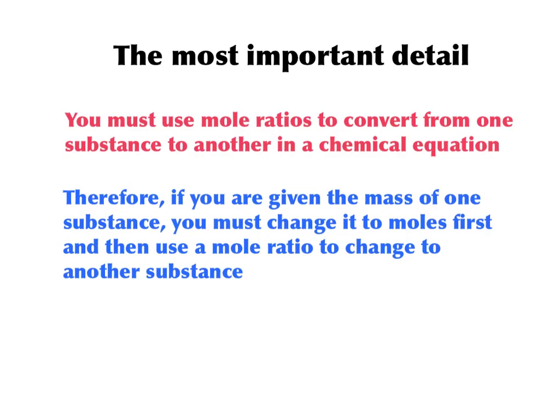The most important detail of using mass in stoichiometry is to make sure that whenever we're changing from one substance to another, we're using mole ratios. If we're given mass, we're going to have to change that mass over to moles first, and then we can use our mole ratio to change it over to the other substance.